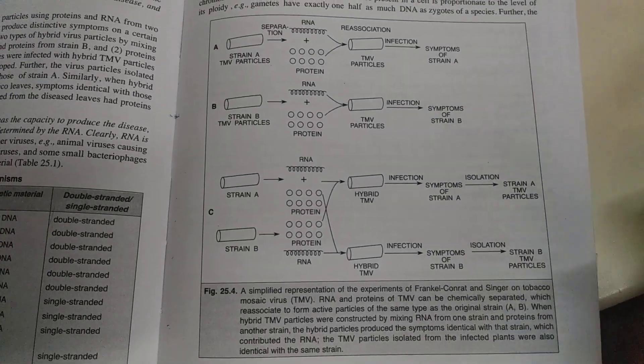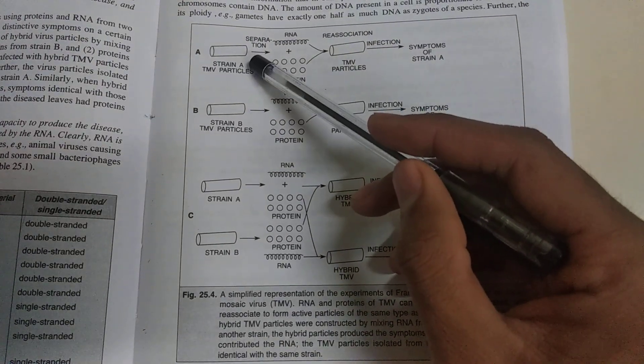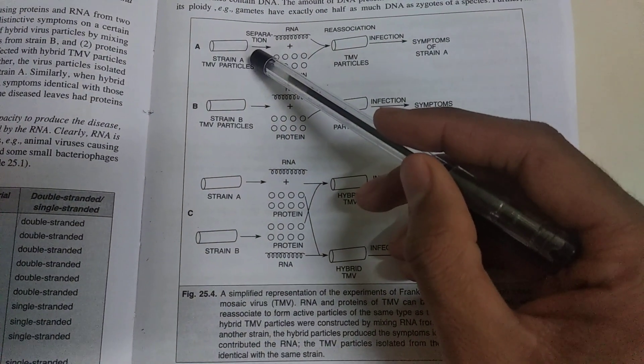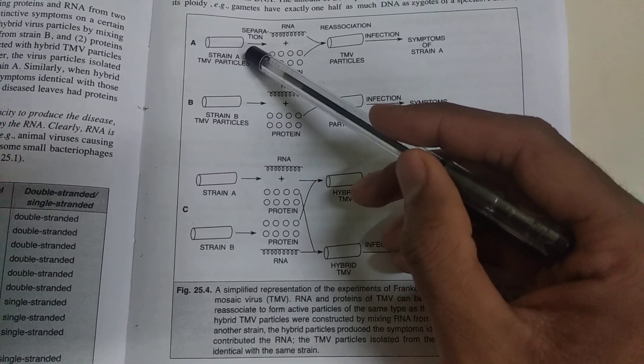They conducted a simple experiment using two strains of TMV virus, that is Tobacco Mosaic Virus, which causes mosaic symptoms in tobacco plants.